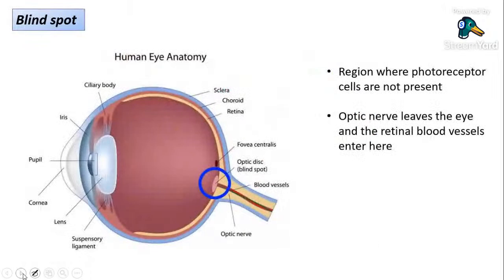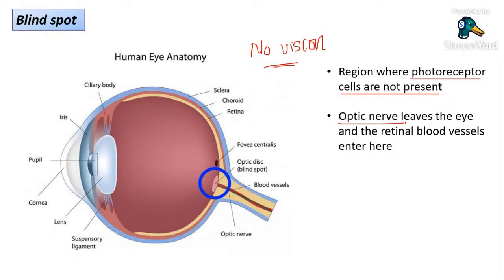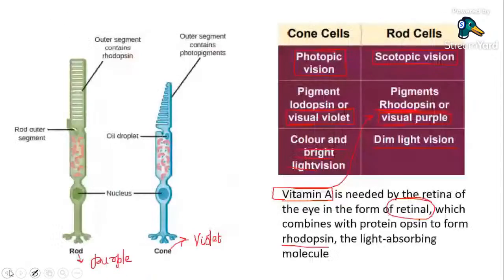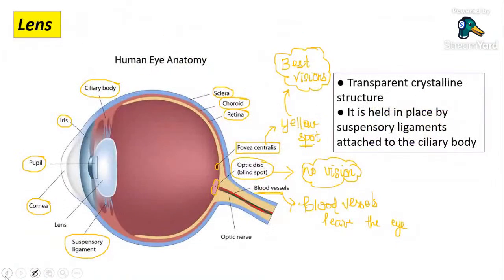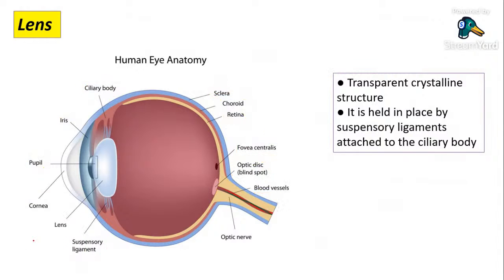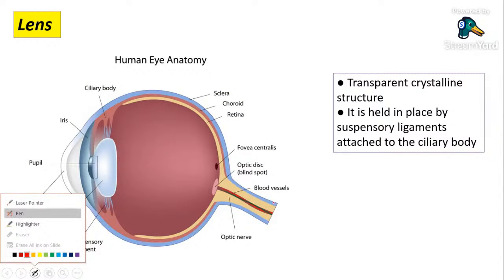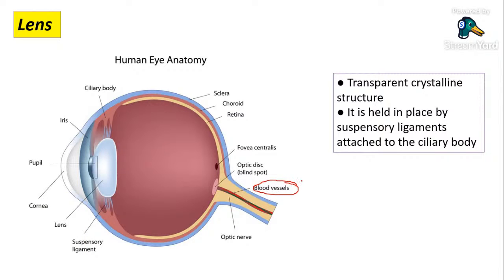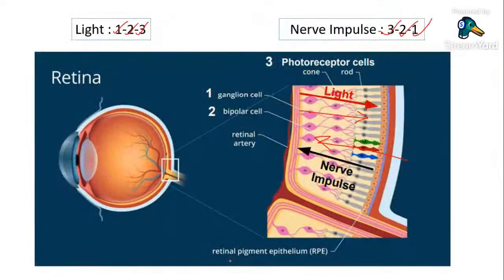The blind spot is the region where photoreceptor cells are not present — it is a region of zero or no vision. The optic nerve leaves the eye at this point, and the retinal blood vessels enter here. To clarify: the blind spot is the area where blood vessels enter the eye and the optic nerve leaves.